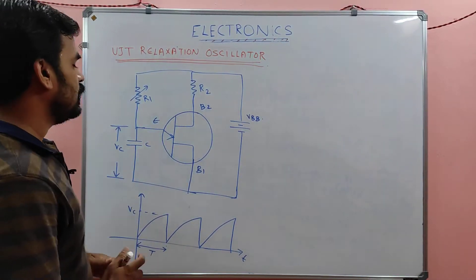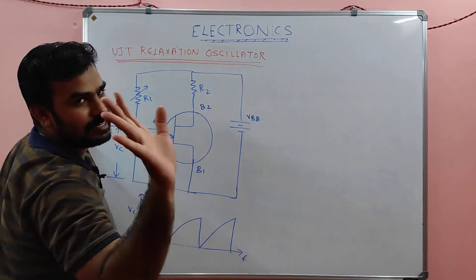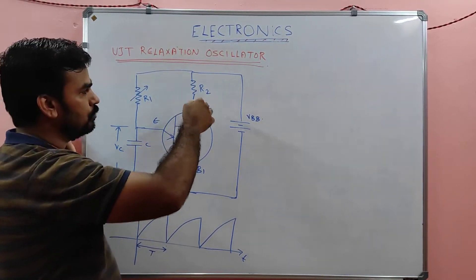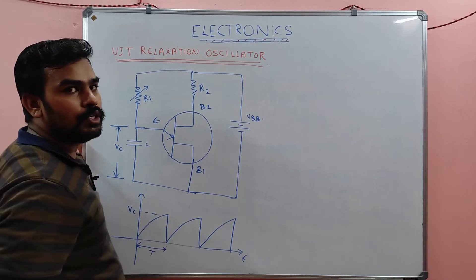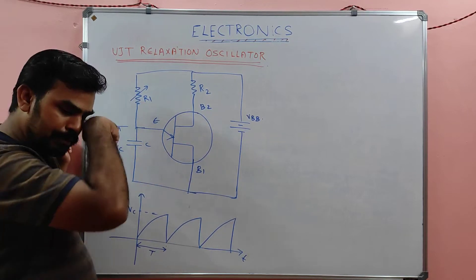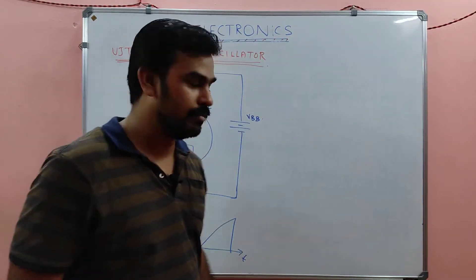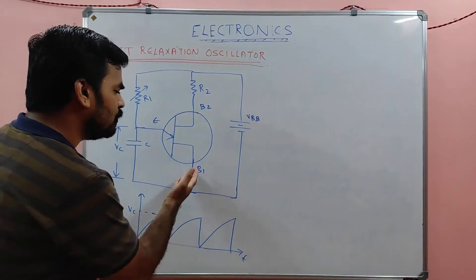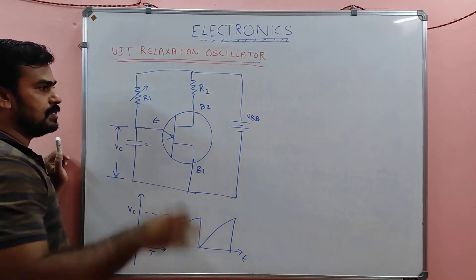A UJT relaxation oscillator mainly uses the UJT itself. This R2 is the base B2 supporting resistance, since B2 has a certain resistance. B1 is connected to the supply because a very high resistance — 5 to 10 kilo ohms — exists between the emitter and B1. C is a capacitor and R1 is a variable resistor.